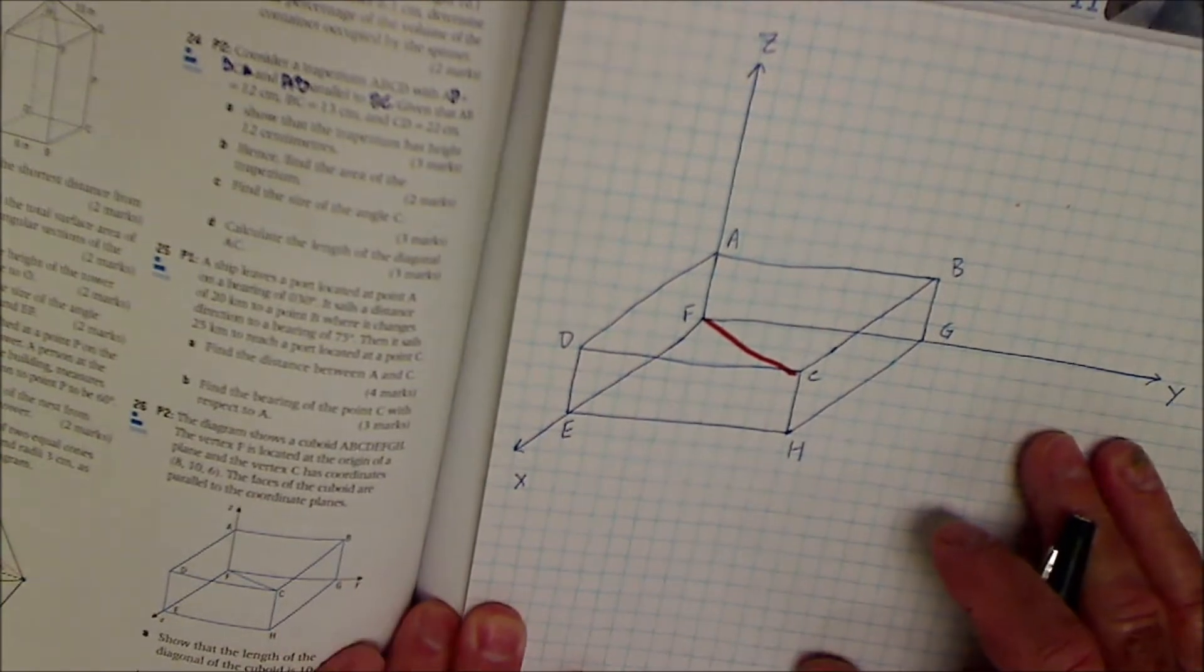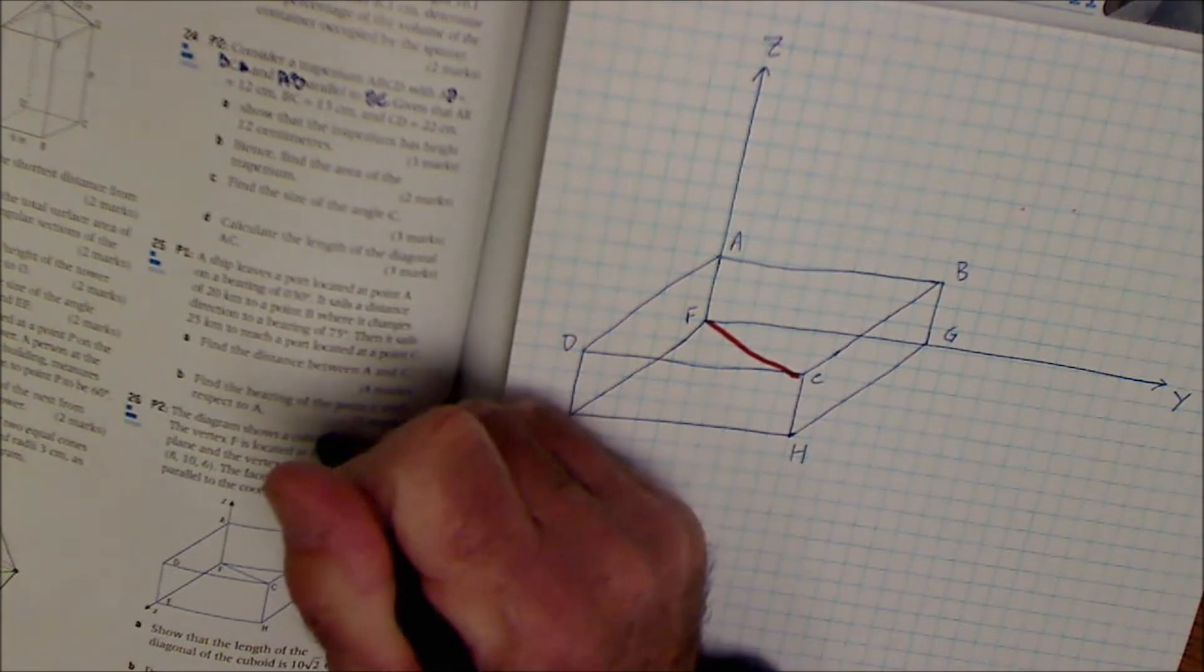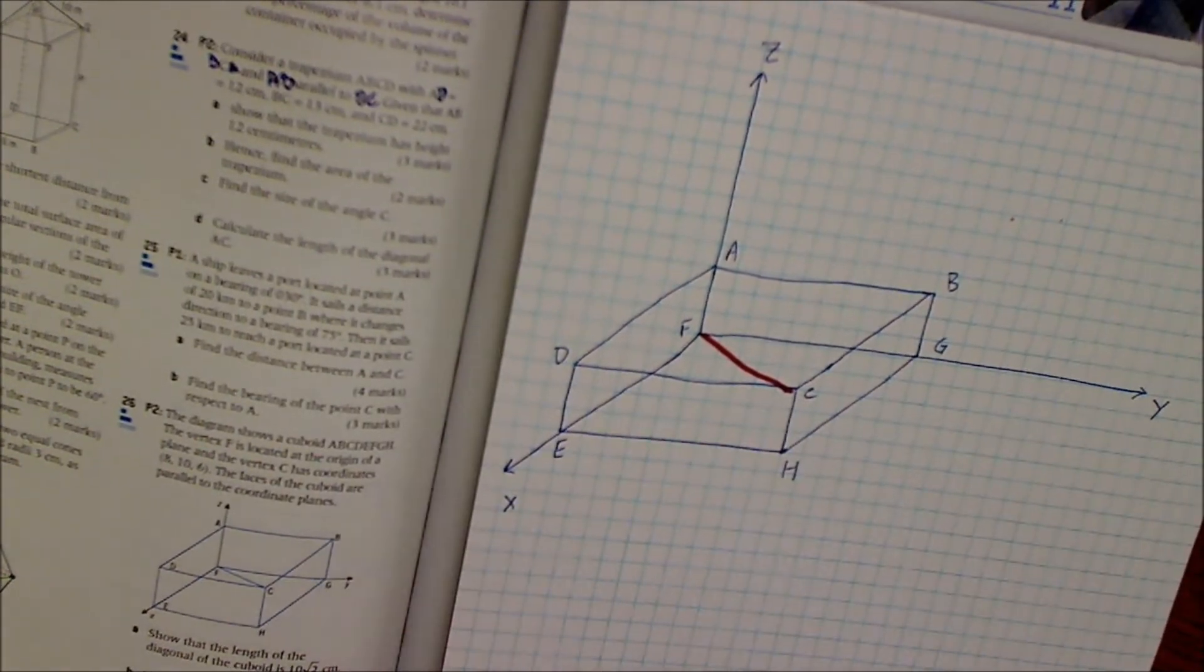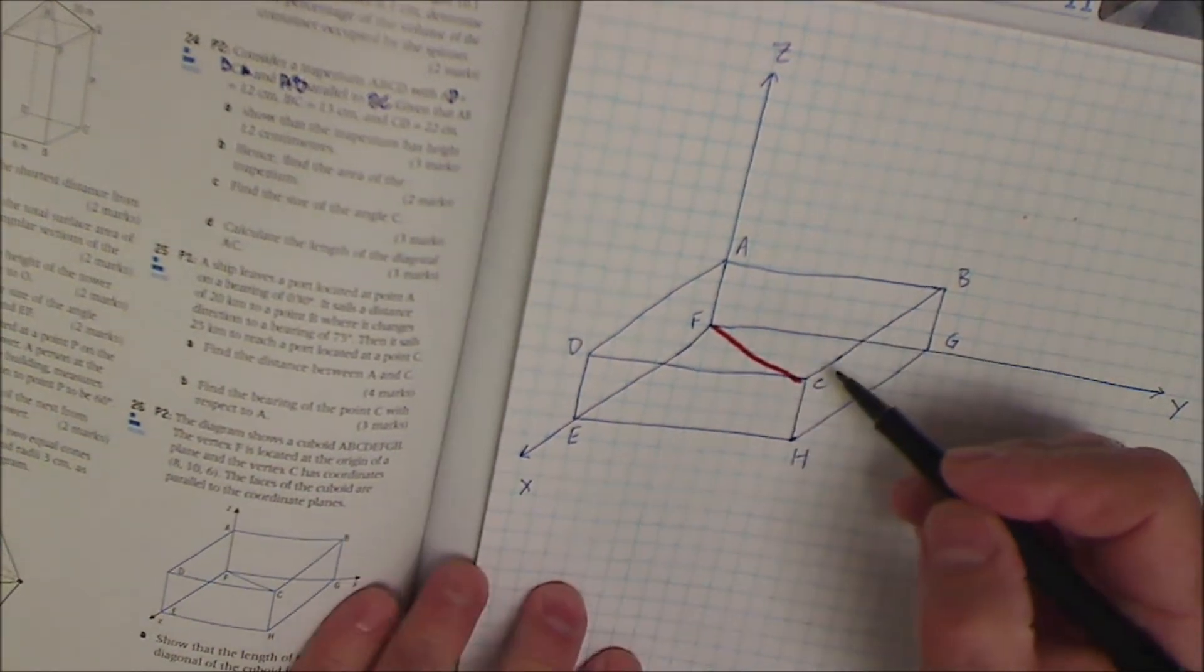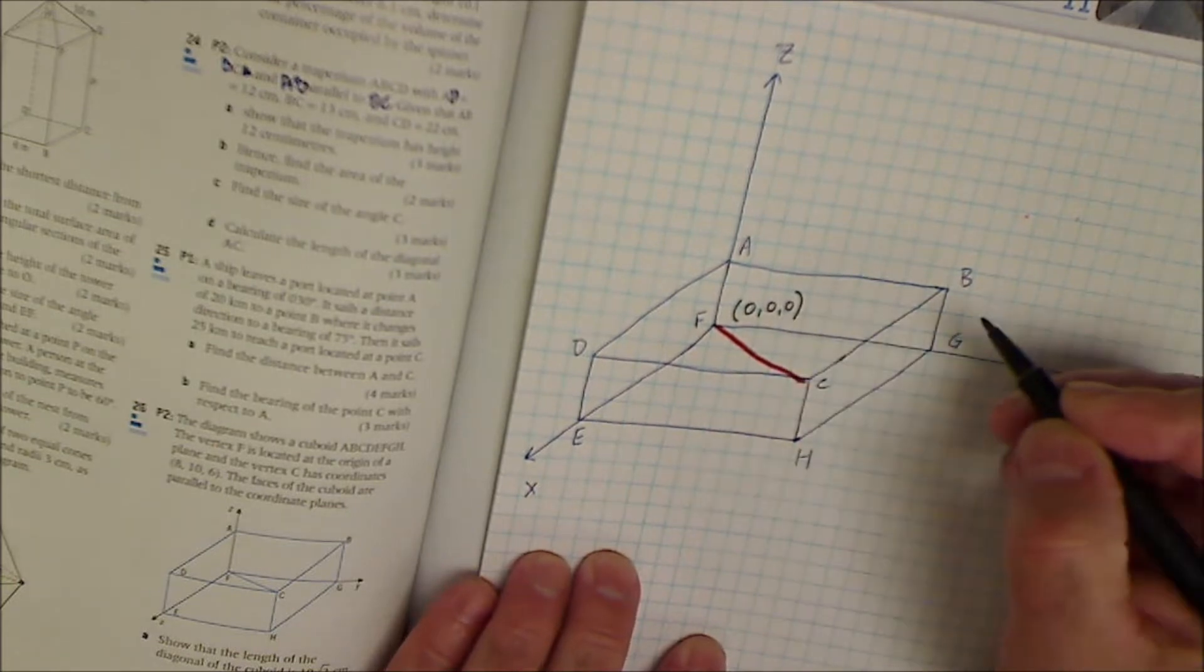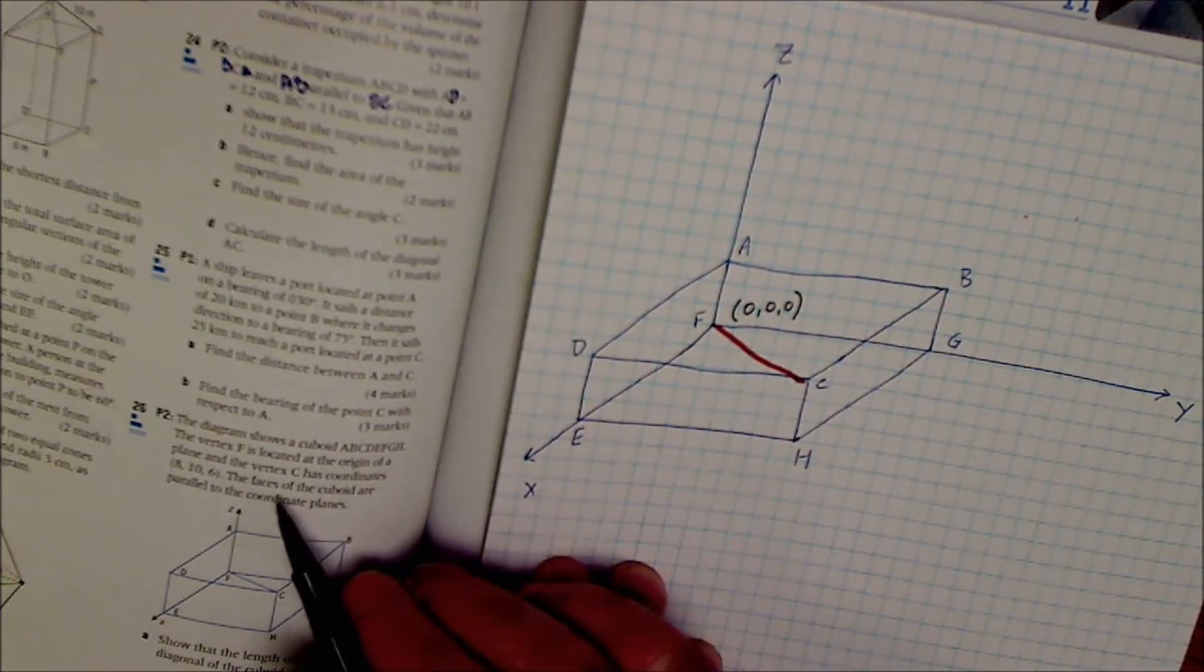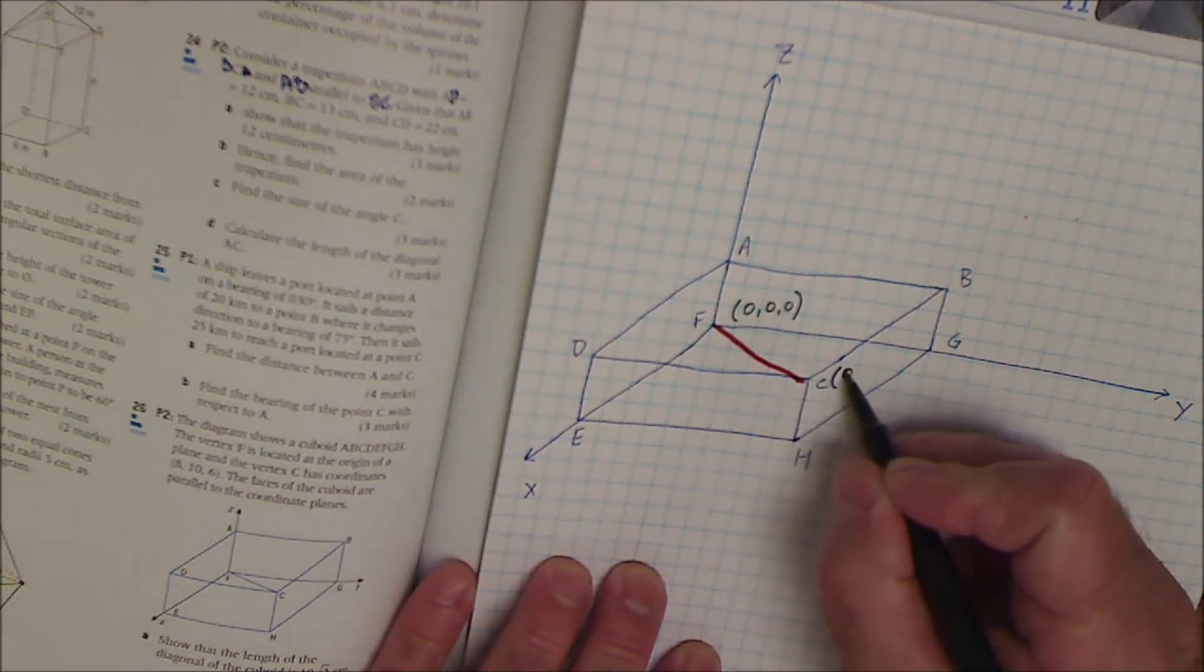So the first thing I'm going to do is transfer the diagram in the book to my paper, and then transfer the paragraph to my drawing. You can see I'm using almost a full sheet of paper here. So the diagram shows this cuboid. The vertex F, this vertex F, is the origin. So that coordinate there is 0, 0, 0. This vertex C, the outside corner, is 8, 10, 6.